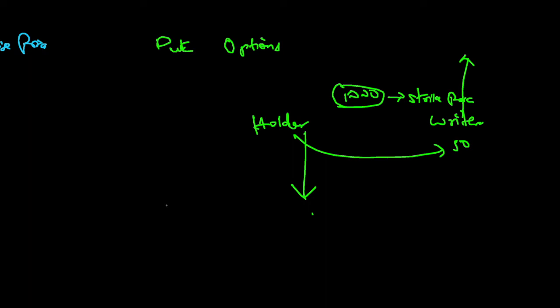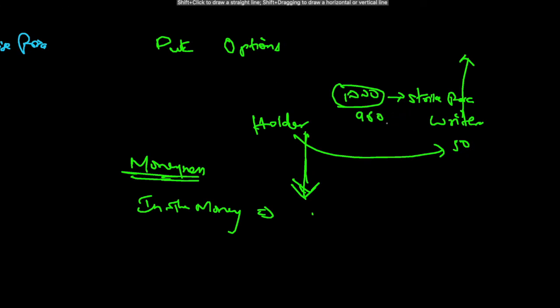So in this case, in-the-money means we will think from the holder's perspective. What is his prediction? He wants the price to come down. So if the spot price is 900, when the price is lower than the strike, we say it is in-the-money. So in this case, 900 is lower than 1000.